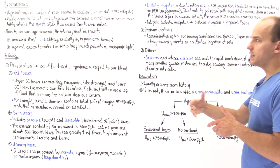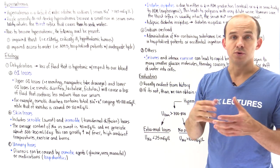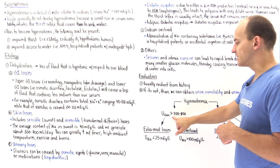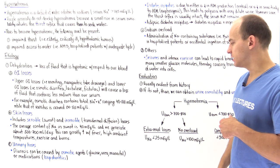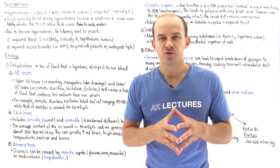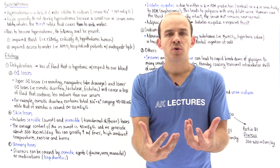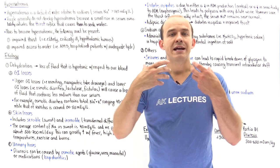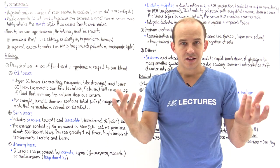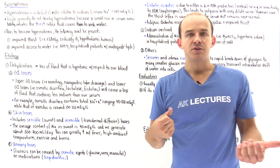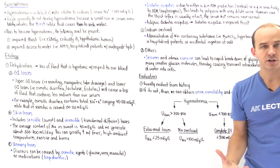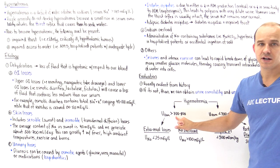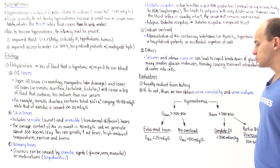If a patient has hypernatremia — serum sodium over 145 milliequivalents per liter — we obtain urine osmolality. If urine osmolality is over 700 to 800 milliosmoles per kilogram, the urine is very concentrated, indicating an appropriate physiological response. If we become dehydrated, we activate the renin-angiotensin-aldosterone-ADH system, releasing lots of ADH, which goes to the kidneys and stimulates reabsorption of free water by increasing aquaporin channel expression.